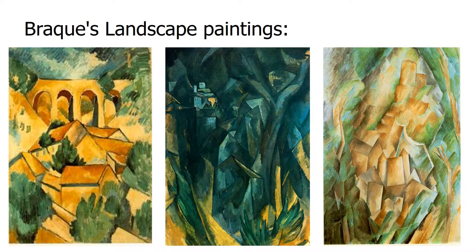The second thing that marked the beginning of Cubism was Braque's series of landscape paintings, where trees and mountains were rendered as shaded cubes. These series of paintings led the French critic Louis Vauxcelles to describe them as cubes, thus giving the movement its name.